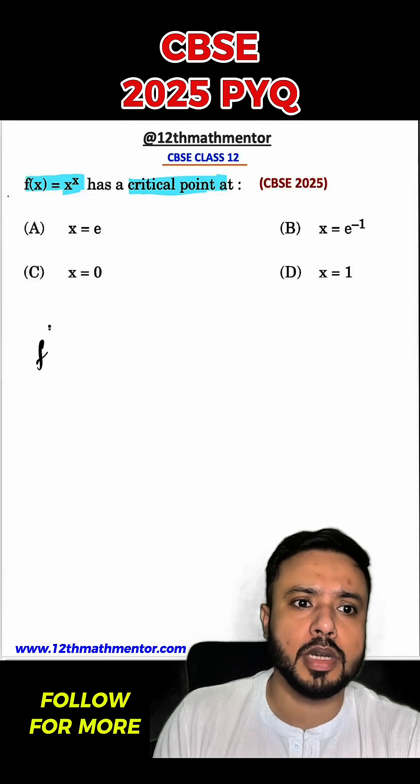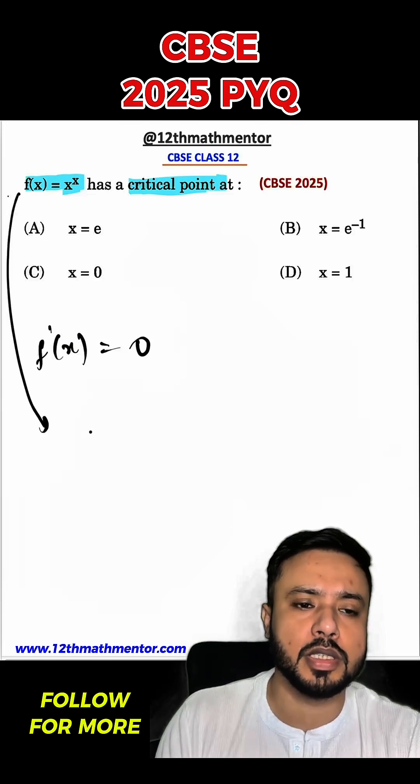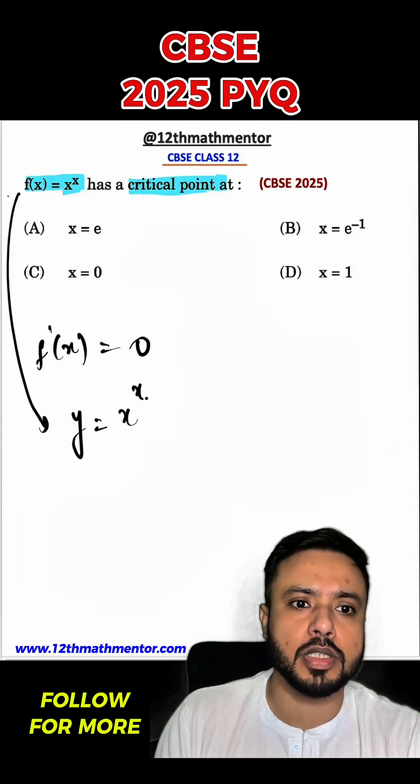We all know that critical point is basically a point where f'(x) becomes equal to zero. So for that, we'll have to differentiate this. We will assume y equals x raised to the power x.